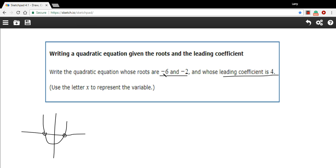So, if we have the roots of negative six and negative two, what that means is the solutions, the x values, were x equals negative six and x equals negative two.